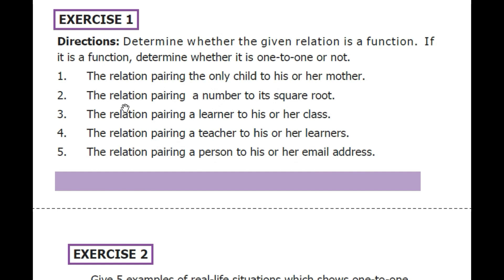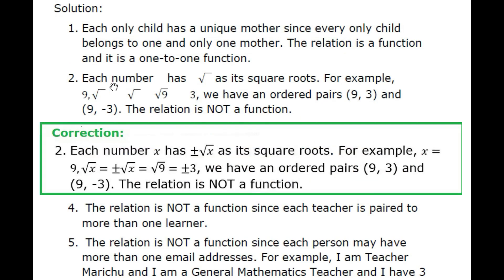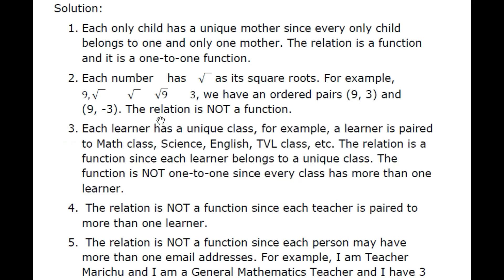Number 2: The relation pairing a number to its square root. Each number x has square root of x as its square roots. For example, x = 9 and the square root of 9 equals plus or minus 3 — because 3² = 9 and also (-3)² = 9. Since one x value maps to two y values, this relation is not a function.